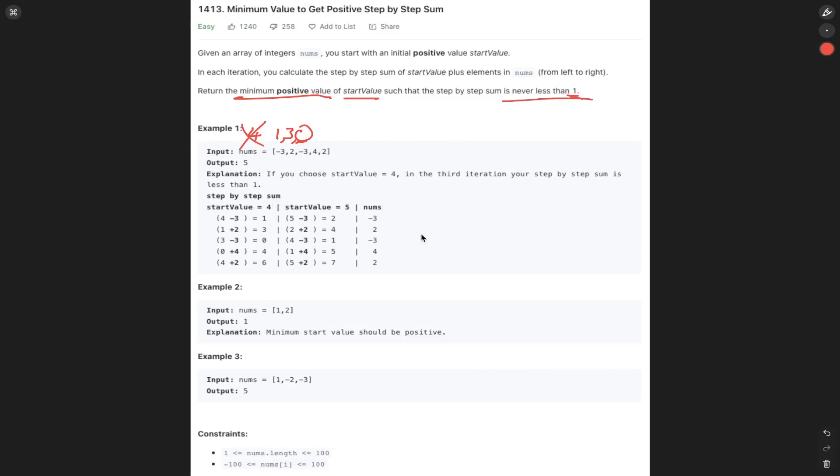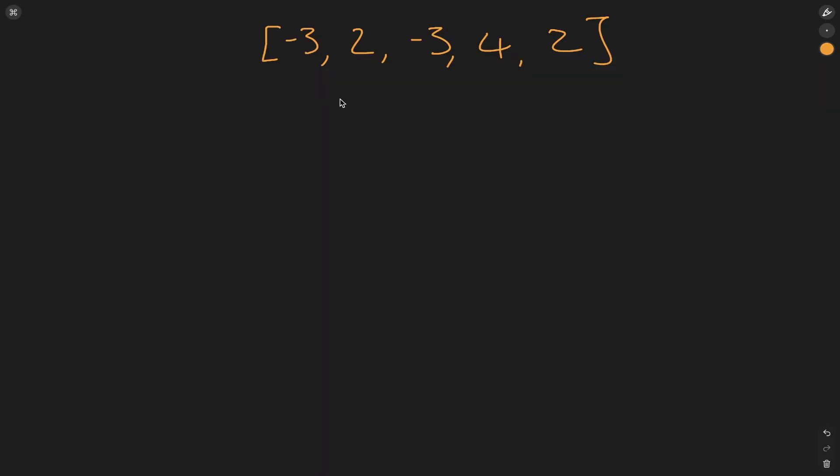Now that we've understood the question, let's jump into the walkthrough. We need to work out the start value where the consecutive sum that is added up never drops below one. We know the minimum sum we can have is one, so we can set this to one.